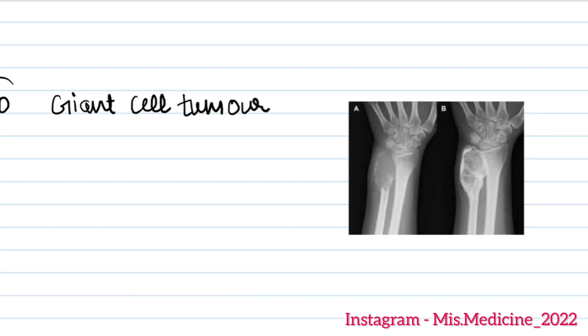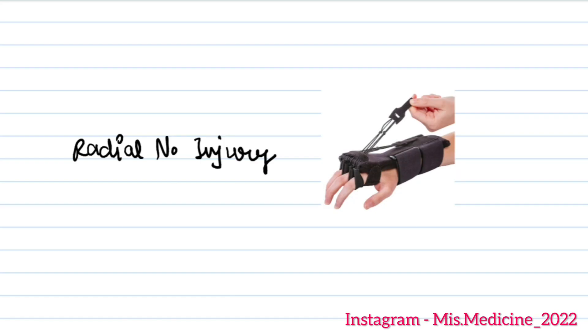Question 10 was giant cell tumour — an image was shown. Question 11 was radial nerve injury, and a splint image was given, something like this though not exactly. Question 12 was about allergy to paraphenylenediamine (PPD), where the allergy had resolved.